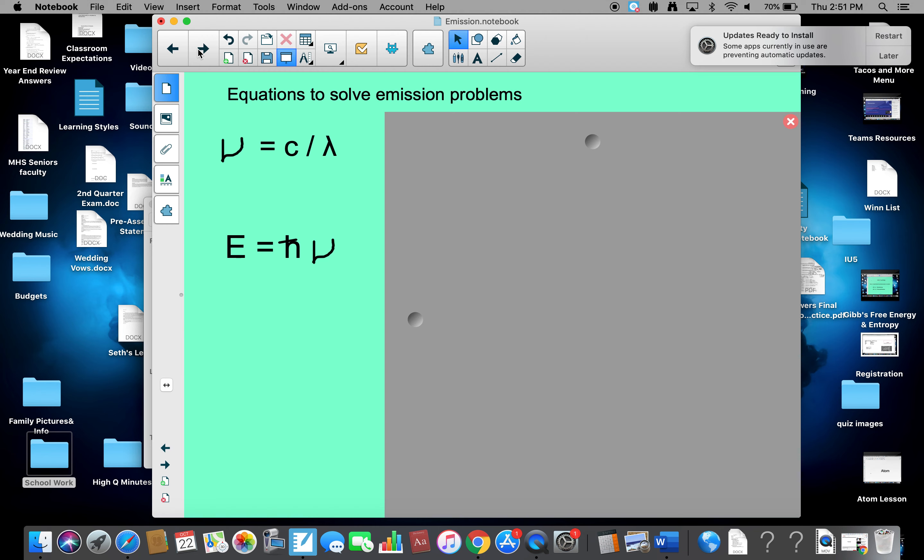Now, we use two equations to determine this emissions. That fat little pregnant V is called nu, and it stands for frequency. Frequency expressed in per second or hertz. It's a number of time away past the point at a given time.